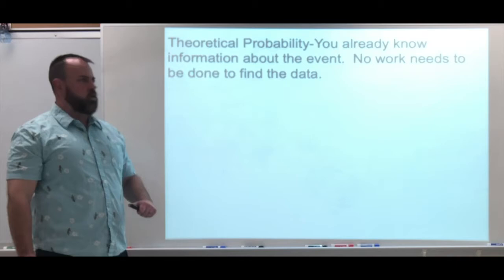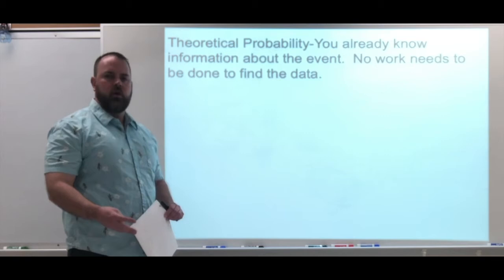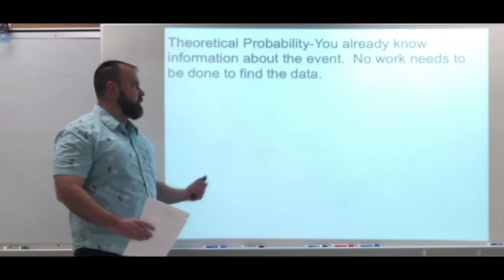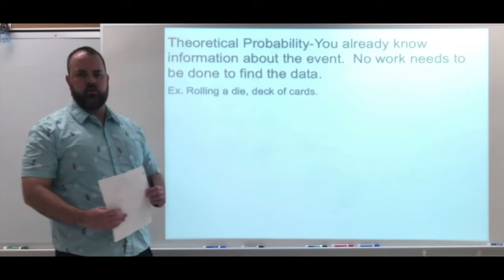One is theoretical probability. This is where you already know information about the event that's happening. Take a deck of cards — if I say what's the chance of pulling a king, you know there are four kings in a deck and 52 cards total. Rolling a die or a deck of cards would be considered theoretical probability, asking what's the chance of pulling this card or rolling this on the die.